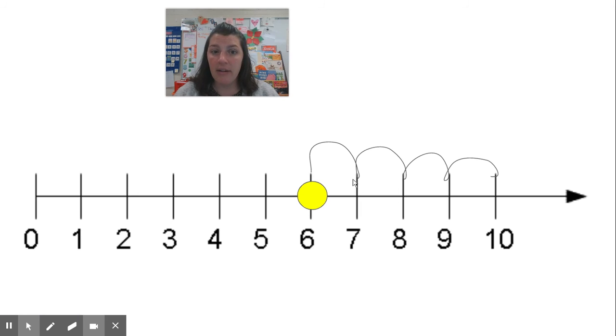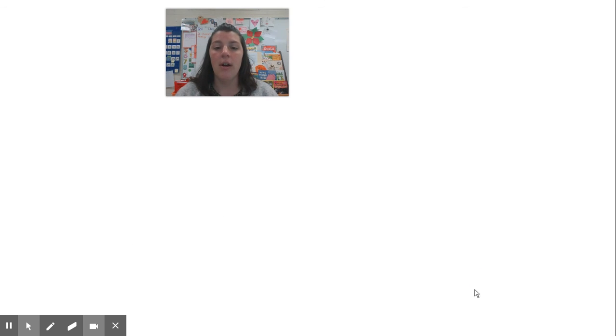You have to count every jump to every line. One, two, three, four. So there would be four to get to ten.